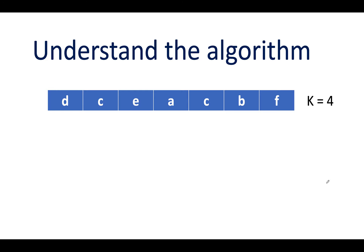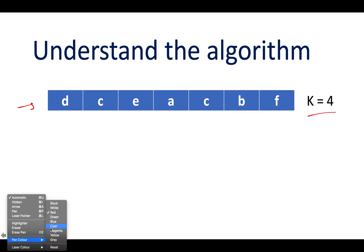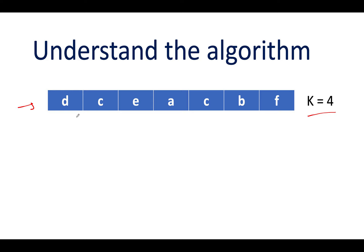Let's try a different example where K equals four. My first four characters are D, C, E, and A. Which one shall I pick? Let's pick A and place it to the end — A goes to the end. Now I have different options for the next iteration. Out of the available characters, let's pick B and place it to the end.